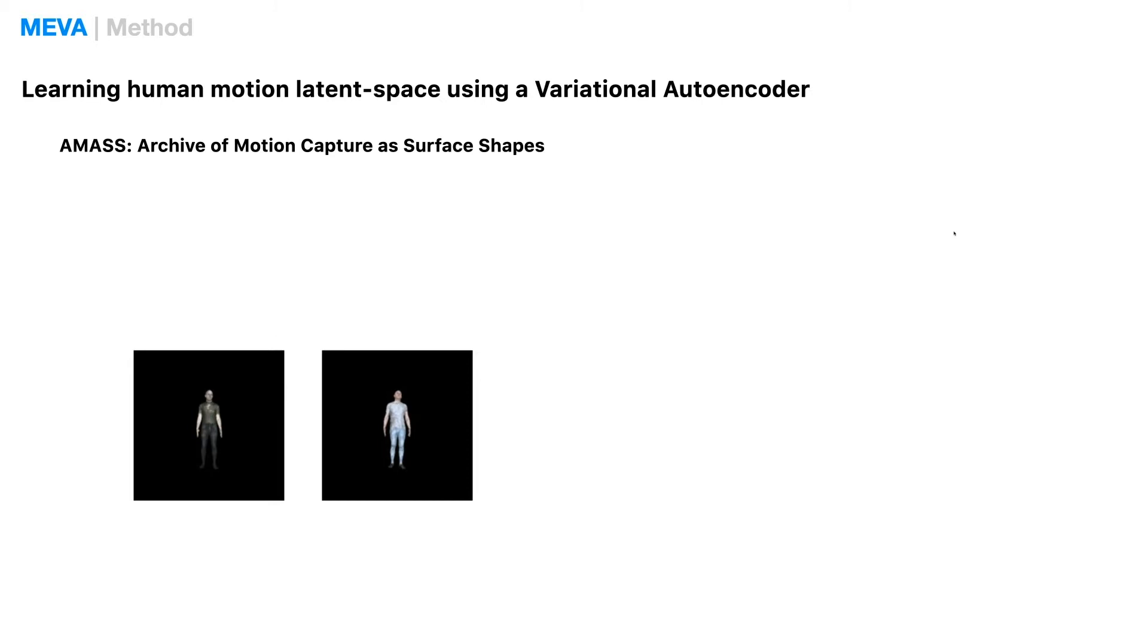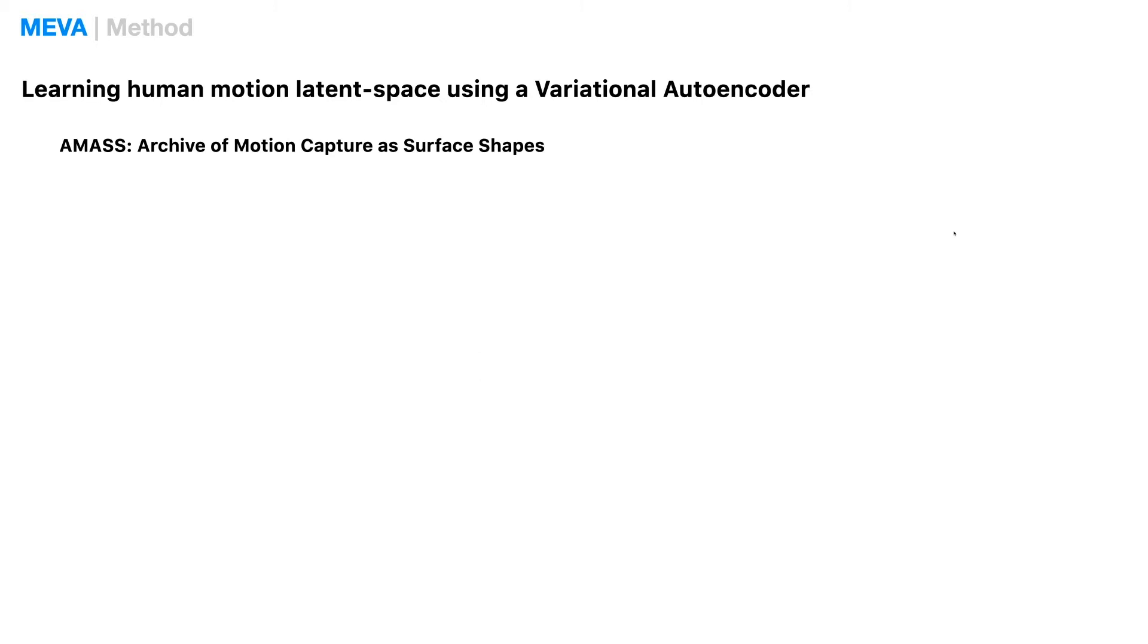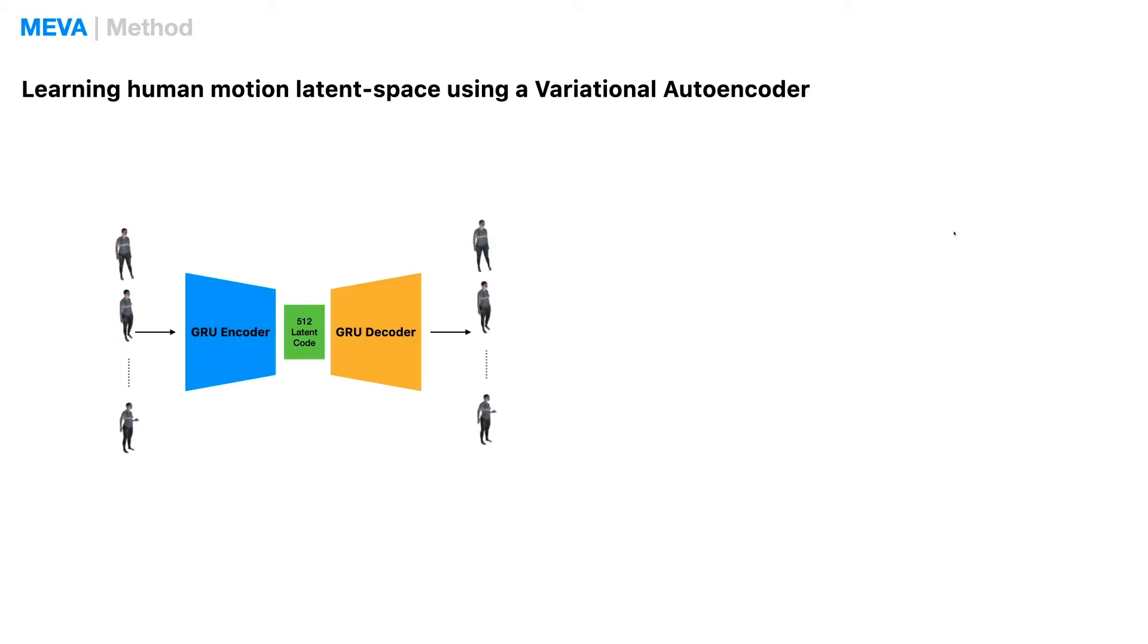We learn a compressive human motion model that can represent a sequence of human motion. We formulate this model as a sequential VAE using gated recurrent units, GRUs.